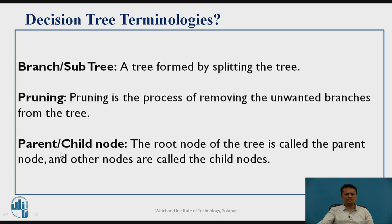There is also something called a branch — whatever split you apply will form a branch, so a tree formed by splitting is called a branch or sub-tree. There is a process called pruning: when forming branches, you may find that some branches are not required at all, so you can remove those by pruning. Finally, there are parent nodes and child nodes — the root node is the parent node, and all other nodes are child nodes.